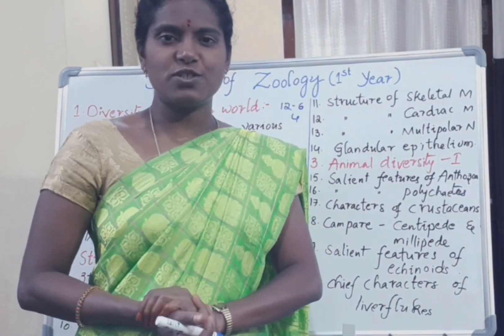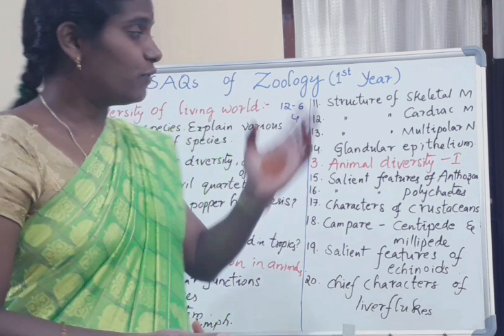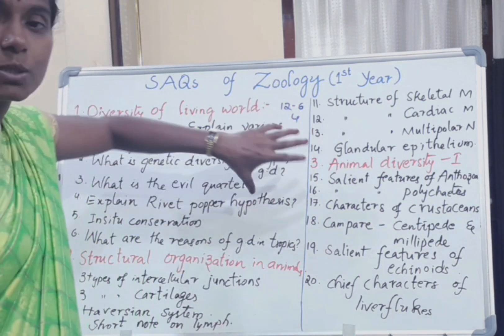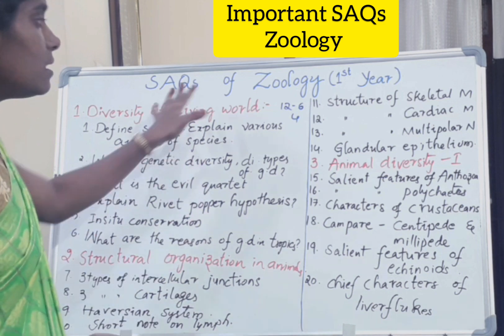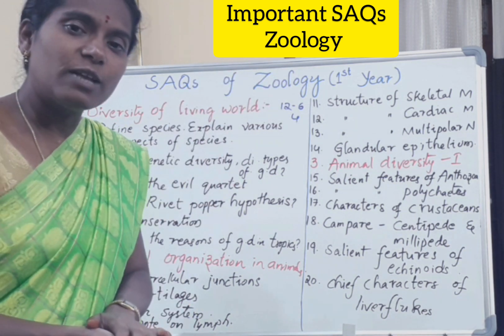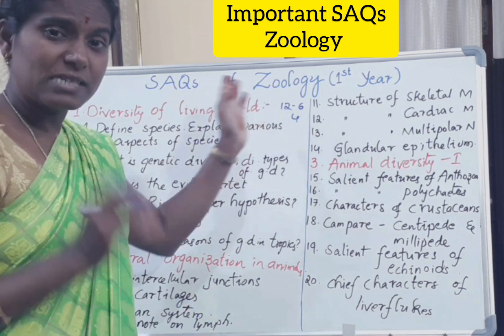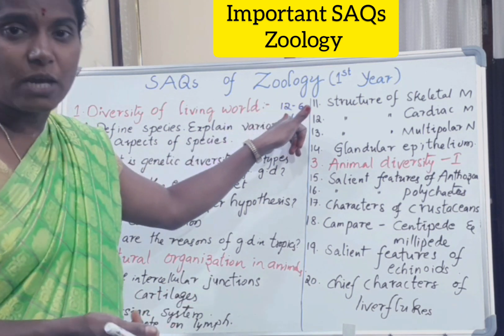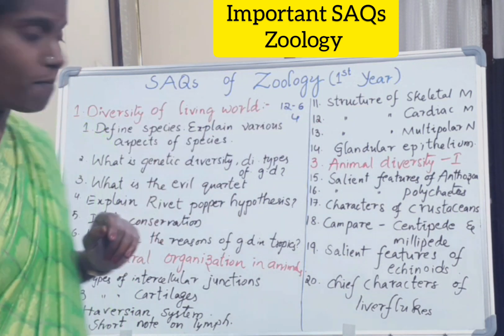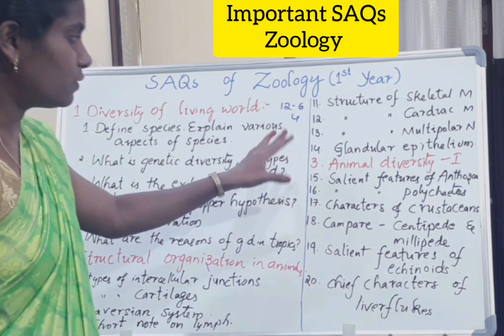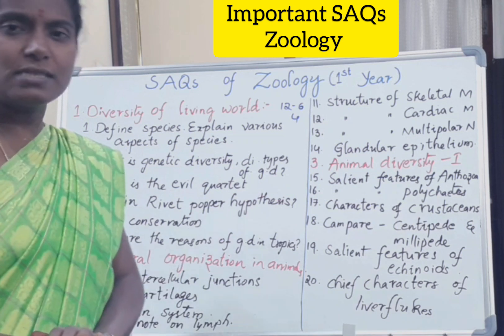Hello viewers, welcome back to Trendy Achievers channel. This video is useful for second year students who are appearing for the first year exams. This is the chapter-wise list of first year zoology short answer questions. There are 12 short answer questions coming, as 70% of the syllabus is covered. Half of the questions offer choice and you should write 6. Each question carries 4 marks. As time is very less, prepare these questions — this helps you a lot.